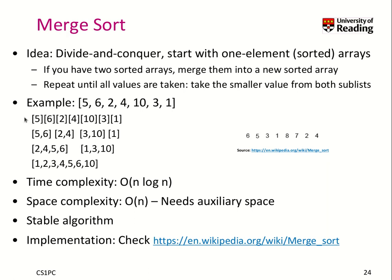To merge two arrays, you look at two sublists and always take the smaller value from the front of each sublist. For example, with array [5, 6, 2, 4, 10, 3, 1]: we start with one-element arrays, merge 5 and 6 into [5,6], merge 2 and 4 into [2,4], then merge 10 and 3 into [3,10]. Now merging [5,6] and [2,4]: compare 2 with 5 — take 2; compare 4 with 5 — take 4; the other sublist is empty so append [5,6]. When a sublist is empty, insert the rest. That's how merge sort works.